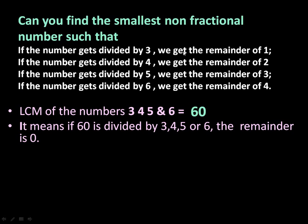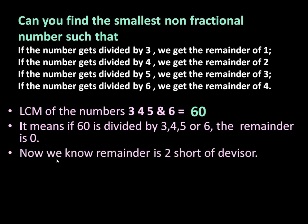Now if you see 1 and 3 there is a difference of 2, 4 and 2 there is a difference of 2, 5 and 3 there is a difference of 2, 6 and 4 there is a difference of 2. It means the remainder is 2 short of divisor. 3, 4, 5, 6 are the divisors and these are the remainders - they are 2 short of divisor: 3 minus 2, 4 minus 2, 5 minus 2, 6 minus 2.